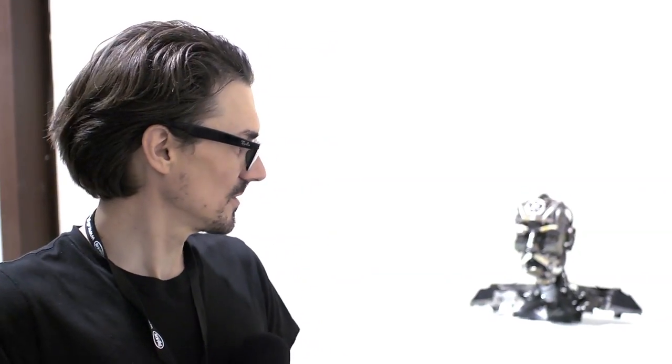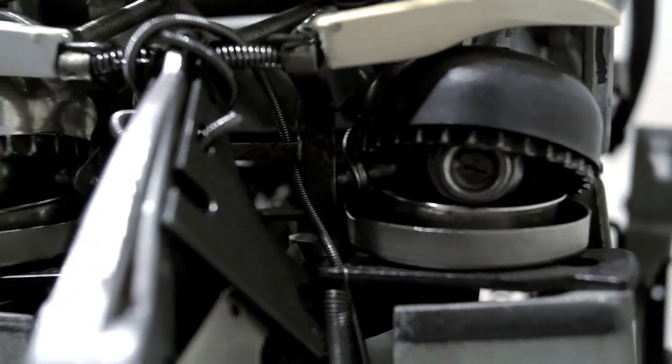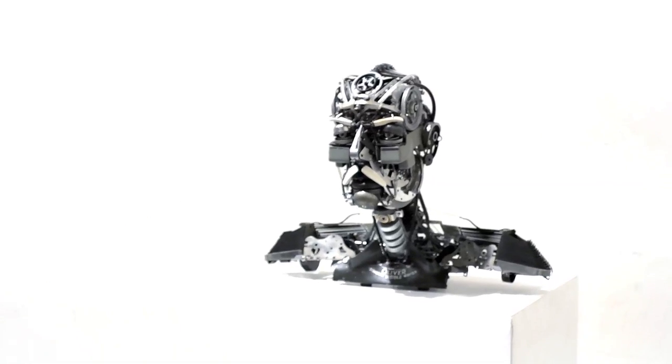Sometimes there's some standards, like Smith Coronas make great spines. And then I'll do surgical extractions of specific pieces that I need. I sought out an Oliver typewriter to do the shoulders and the clavicle area.